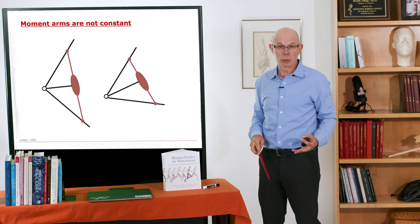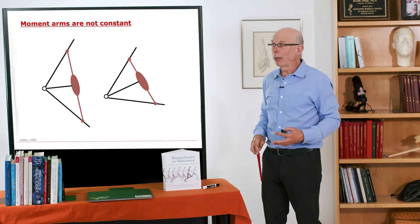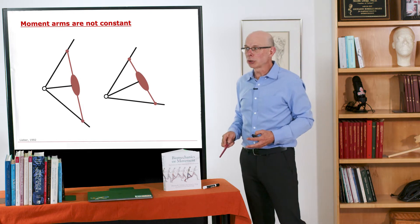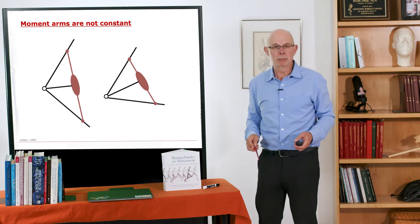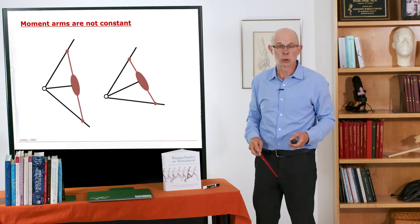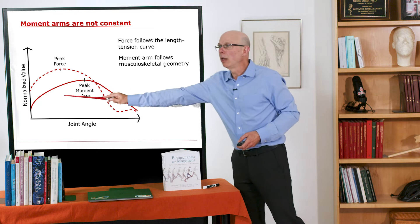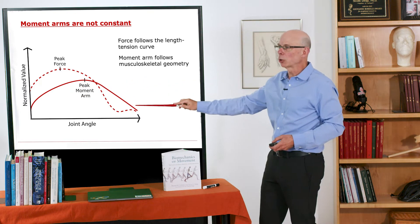Moment arms also vary with joint angle. Moment arms, remember, are not constant. You can see as we move through a range of motion, this single muscle has a moment arm that changes with joint angle. So if we put that on our plot, we can see that the moment arm is changing with joint angle.